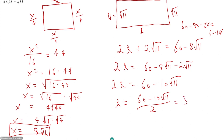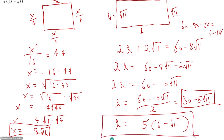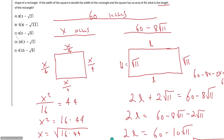Dividing both sides by 2 gives L equals 30 minus 5 root 11. Factoring out the 5, L equals 5 times the quantity 6 minus root 11. That is the answer. This is a great problem for testing everything you should know about area and perimeter for common quadrilaterals — if you can do this question, you can handle pretty much any area or perimeter problem.